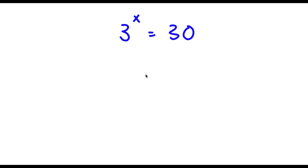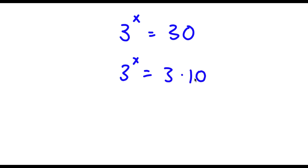Hey guys, welcome back to Political Academics. In today's video I'm going to be teaching you how to solve this exponential equation. Make sure to stick to the end of the problem where I have three bonus problems that are similar to this one which you guys can try to solve. So I have 3 to the power of x is equal to 30. To start, 30 we can rewrite as 3 times 10, so now I have 3 to the power of x is equal to 3 times 10.